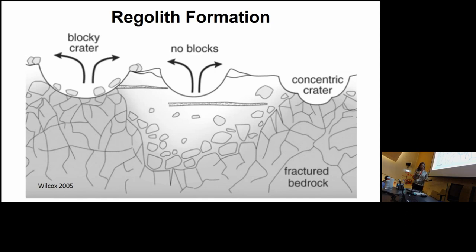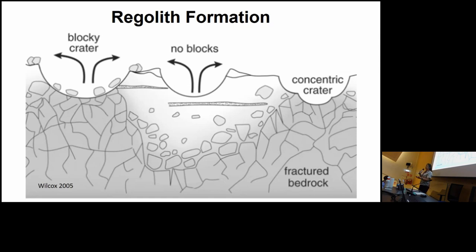The lunar regolith primarily grows as a result of impacts large enough to excavate below the existing regolith. Where you have a regolith that is already deeper, a smaller impact will turn the regolith and bring fresh material to the surface, but won't make it any deeper. To actually make the regolith deeper, you need an impact that excavates solid rock from underneath the surface.